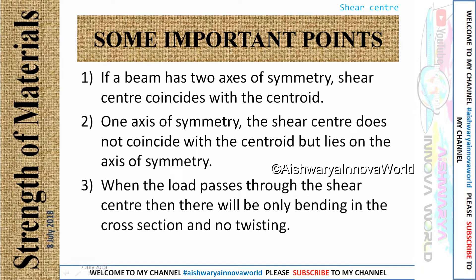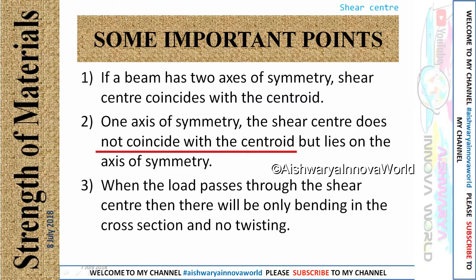If a beam has two axes of symmetry, the shear center and the centroid will coincide at the same point. If a beam has symmetry in only one axis, the shear center does not coincide with the centroid, but it lies on that axis of symmetry.